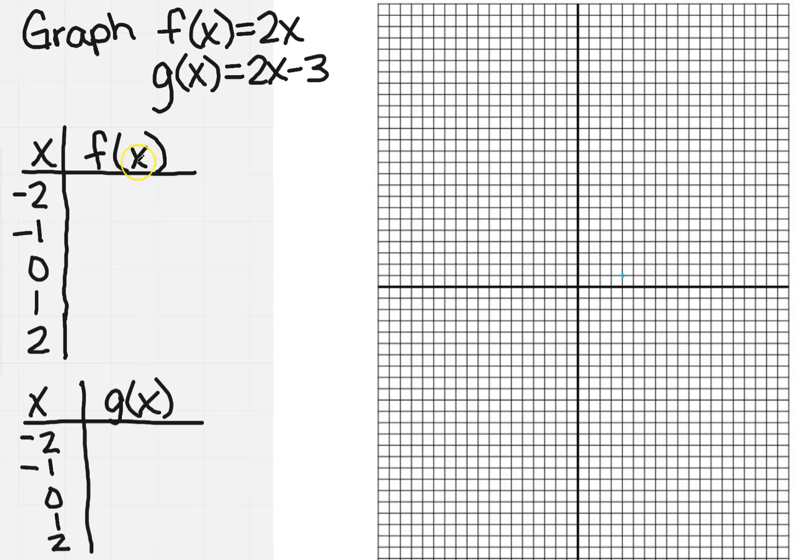So everywhere there's an x in f of x, I'm going to put in minus 2. So I'm going to get minus 4, minus 2, 0, 2, and 4.